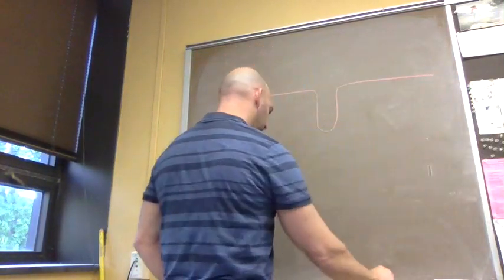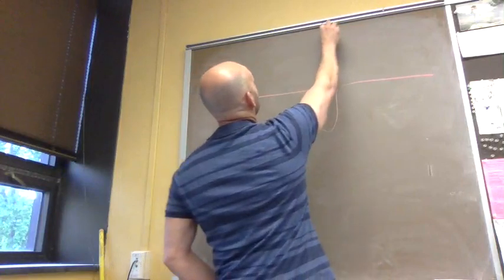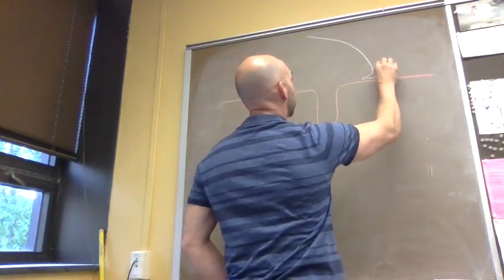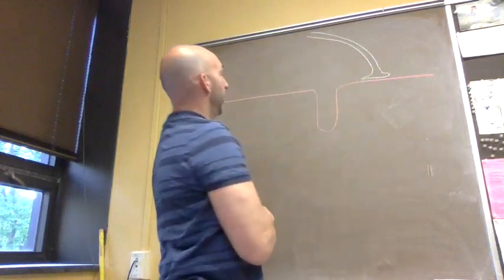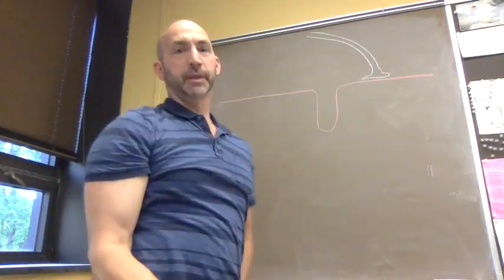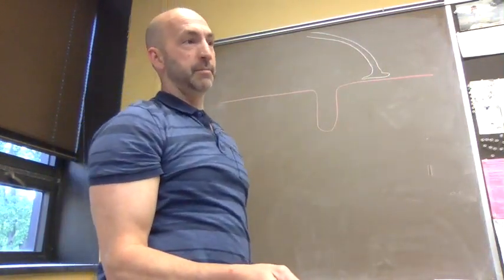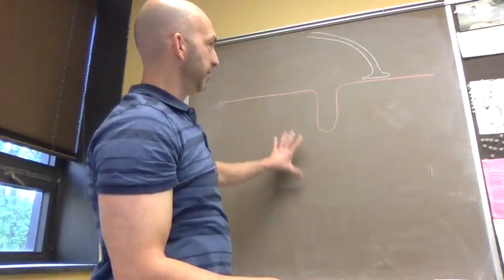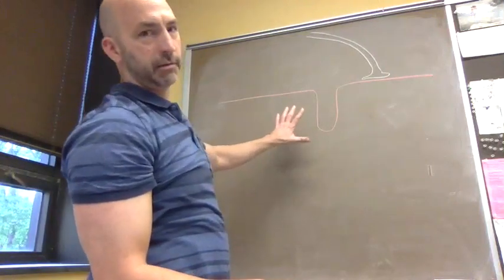Here we've got our T-tubule. A somatic motor neuron comes down and synapses with that muscle fiber. Remember, a somatic motor neuron synapses with multiple skeletal muscle fibers, and I'm showing you part of that skeletal muscle fiber cell.